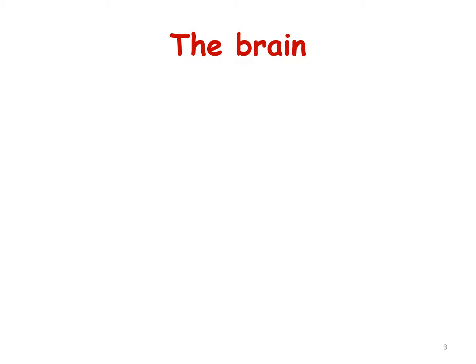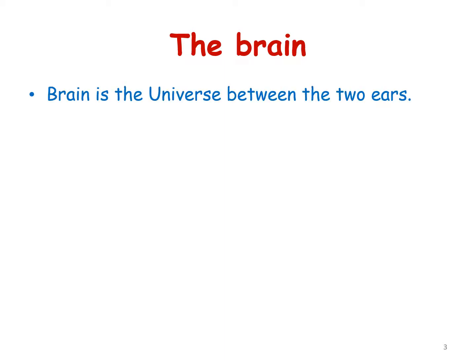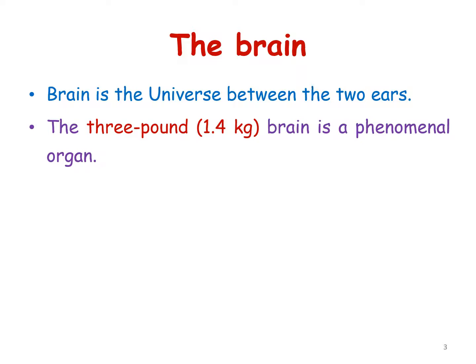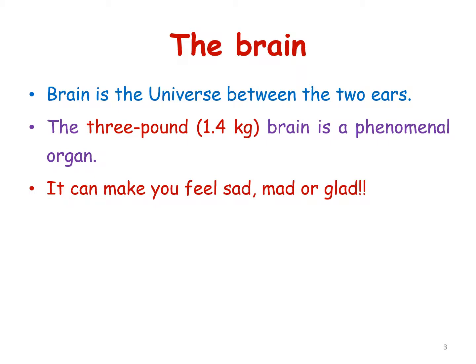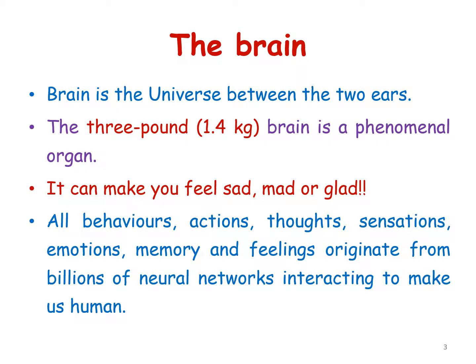The brain is the universe between the two ears. The 3-pound brain is a phenomenal organ. It can make you feel sad, mad, or glad. All behaviors, actions, thoughts, sensations, emotions, memory, and feelings originate from billions of neural networks interacting to make us human.